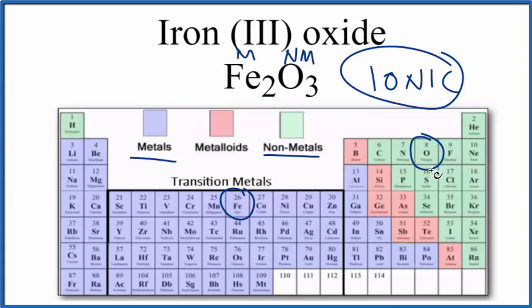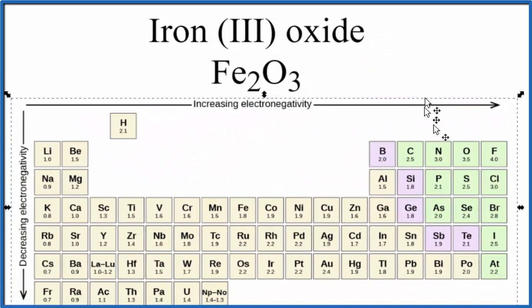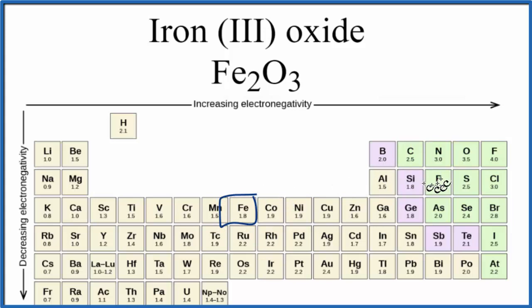We should also look at electronegativity though to see the difference in electronegativity between the iron and the oxygen. So in this periodic table we have values for electronegativity. We find iron right here that's 1.8 and oxygen is 3.5.